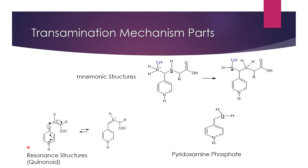The resonance structures are important — they are the real highlight of the mechanism. They form quinonoid intermediate structures, which are resonance-stabilized because the ring reforms its aromaticity. The nitrogen acts as an electron sink and can kick back out electrons. The pyridoxamine phosphate structure represents the halfway point of the mechanism — at this point the alpha amino group from the amino acid has been transferred onto the PLP ring itself.